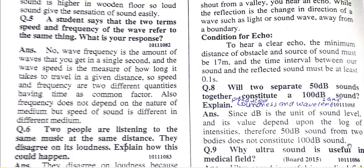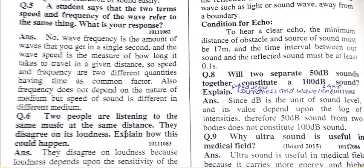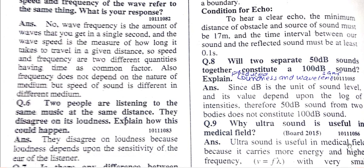For an echo to occur, the distance between the vibrating body and the obstacle must be at least 17 meters, and the time period between the original sound and the echo must be at least 0.1 seconds.